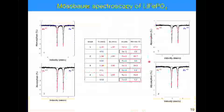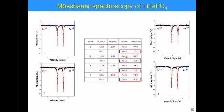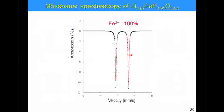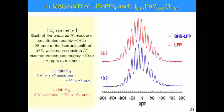Finally, if we check the Mössbauer spectroscopy of LFP, all commercialized materials contain a certain amount of Fe3+ in the active material. But in our case, we can see 100% Fe2+ ions in the oxygen-poor crystals. We can also confirm the Fe2+ ions via NMR spectroscopy over the LFP electrodes.